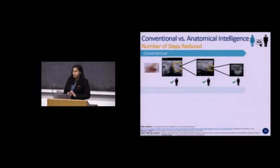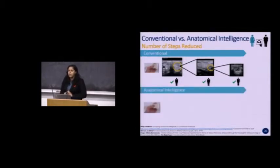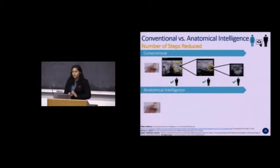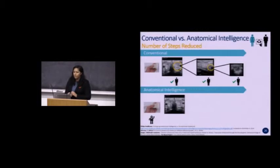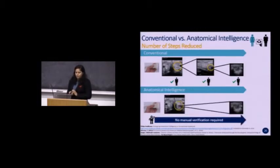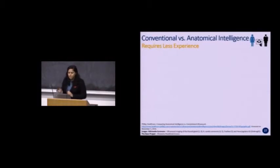Using anatomical intelligence, we can reduce the number of steps to acquire a single image and save time overall. The sonographer runs the transducer over the general area of the organ, having already inputted the organ or area of interest into the machine. The anatomical intelligence then uses its auto-scan feature to locate the exact organ: it looks at the current image, picks out the important landmarks, and uses its database of images to compare and auto-focus on the organ of interest, saving the manual verification and adjustment steps required in between.